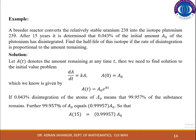Second example: A breeder reactor converts the relatively stable uranium-238 into the isotope plutonium-239. After 15 years, it is determined that 0.043% of the initial amount of plutonium has disintegrated. We need to find the half-life of this isotope, given that the rate of disintegration is proportional to the amount remaining.